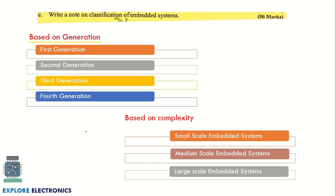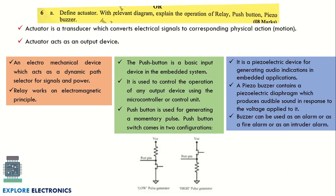The next question asks you to write a note on the classification of embedded systems. Embedded systems can be classified by generation — first, second, third, and fourth generation — and by complexity — small scale, medium scale, and large scale. Briefly explain each with a relevant example.